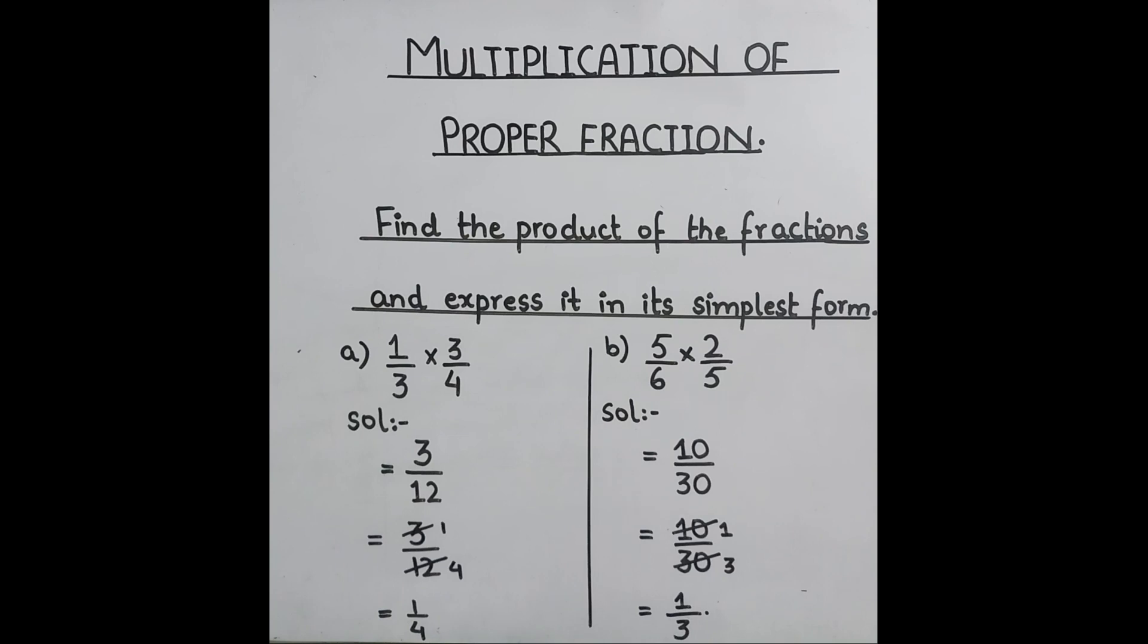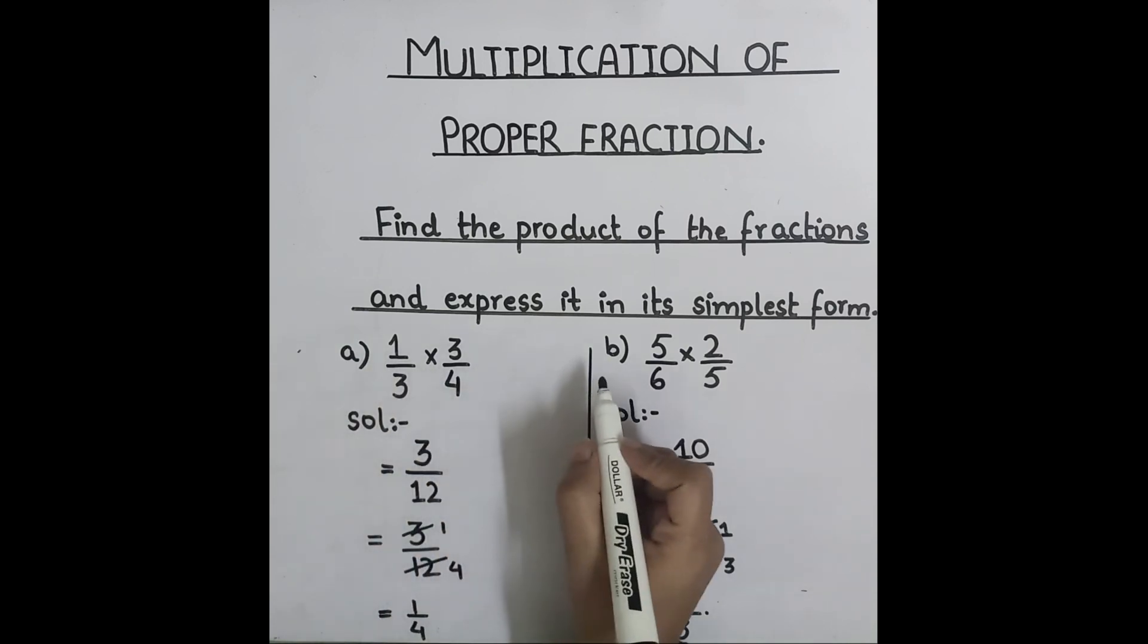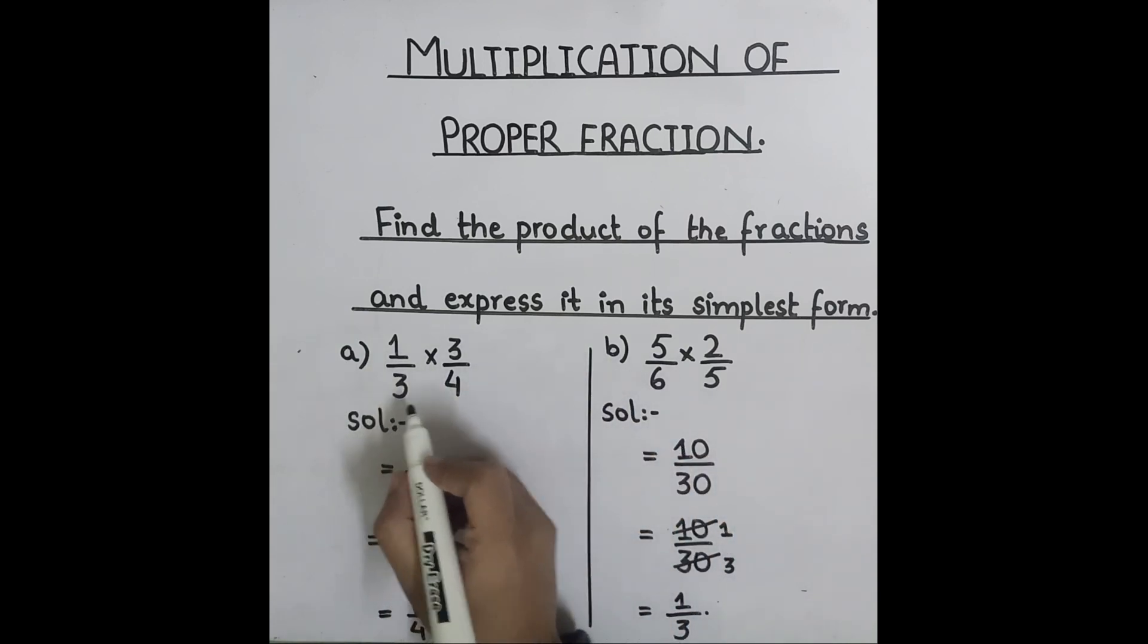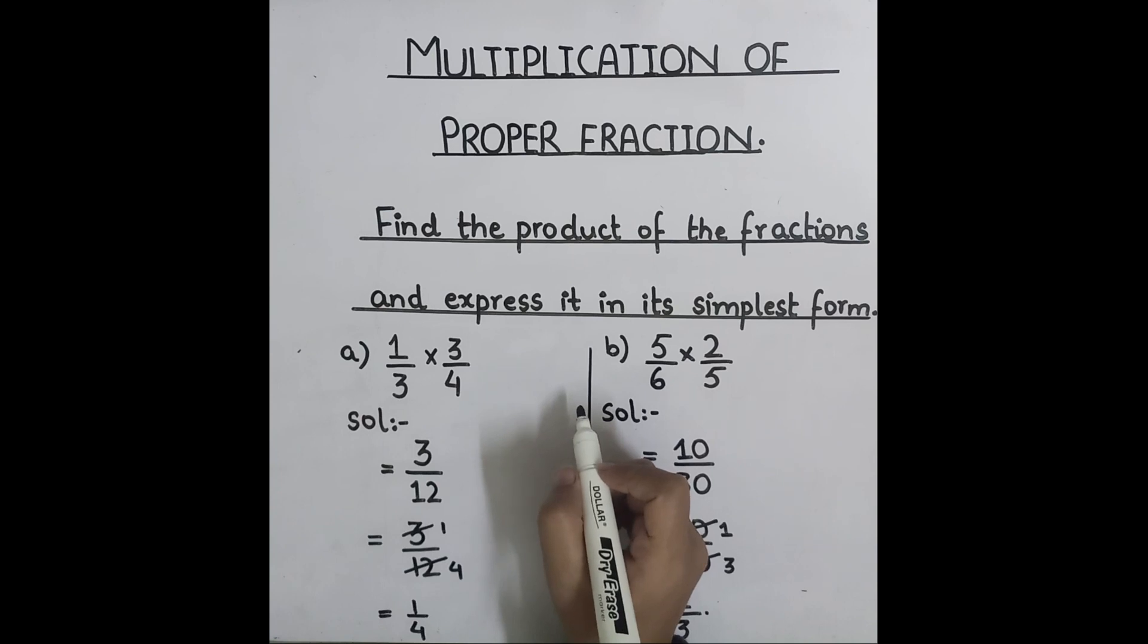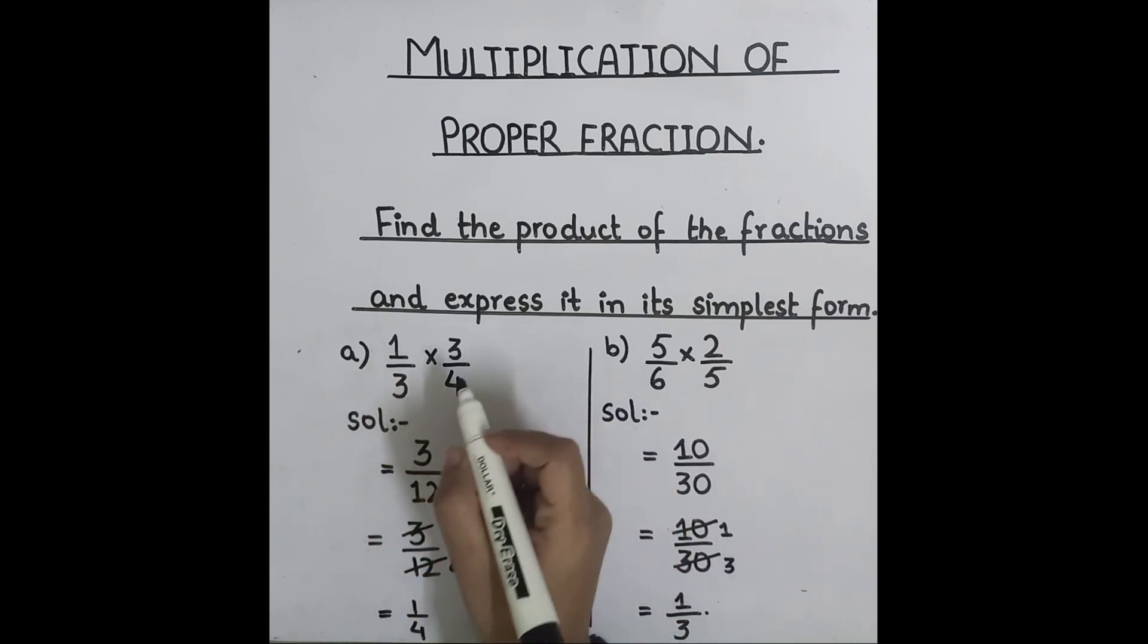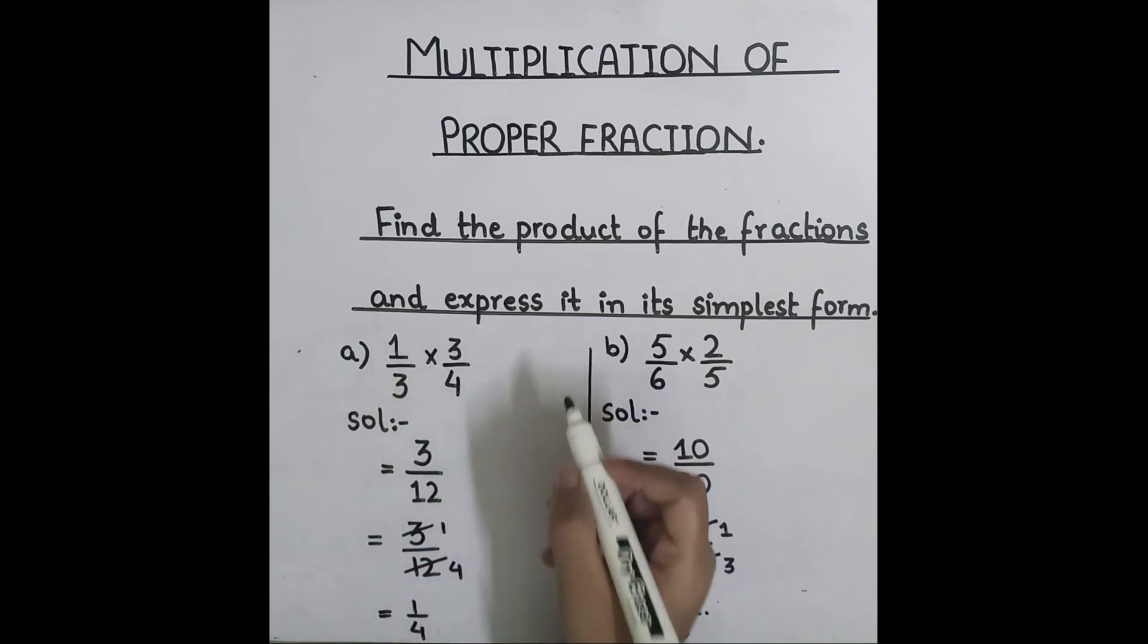There are no specific rules for the multiplication of proper fractions. Just make sure to multiply all numerators first and then multiply all denominators later. Whether you have two fractions, three fractions, four, five, the rule will remain the same.